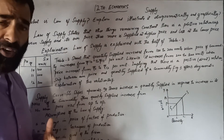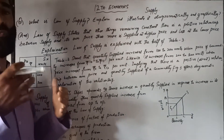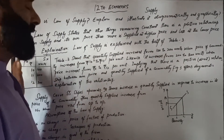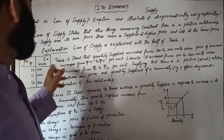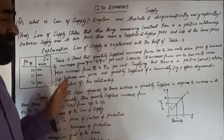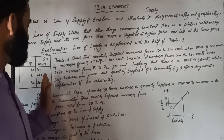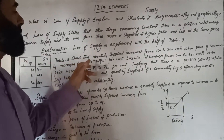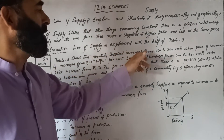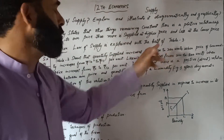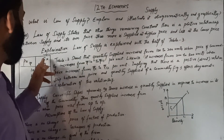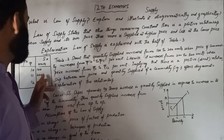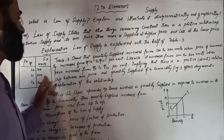That means there is a positive relationship, or we can say a direct relationship, between the supply of a commodity and the price of a commodity. Table 3 shows that quantity supplied increases from 100 to 200, and this quantity supply S of X increases from 100 to 200.